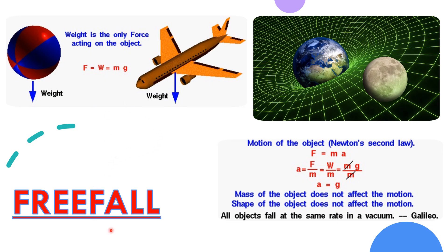Free fall. In the absence of air resistance, all bodies at the same location above the earth fall vertically with the same acceleration, small a. Moreover, the acceleration remains essentially constant throughout the descent if the distance of the fall is small compared to the radius of the earth.